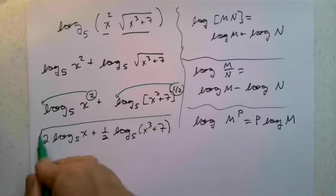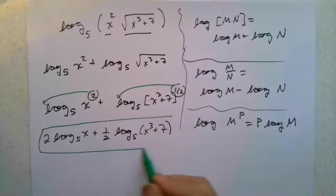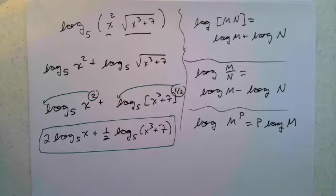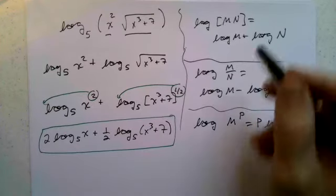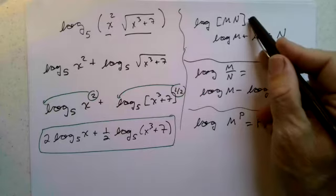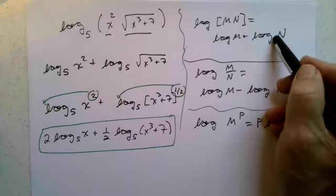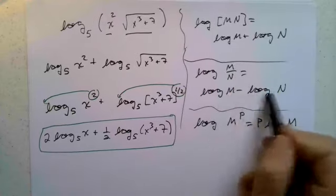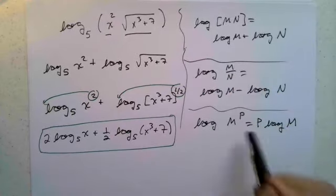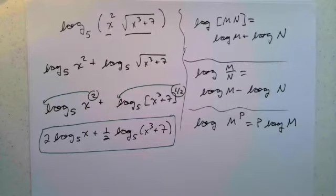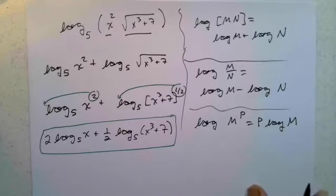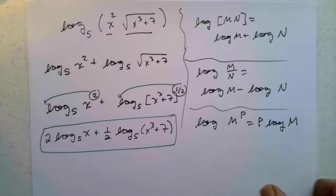Log base five of x cubed plus seven cannot be written in any other way, so that's as far as we can expand it using those three rules. To recap: log of the product is the sum of the logs, log of the quotient is the difference of the logs, and you can pull the exponent down. Those are our three basic properties. Let's look at another one.